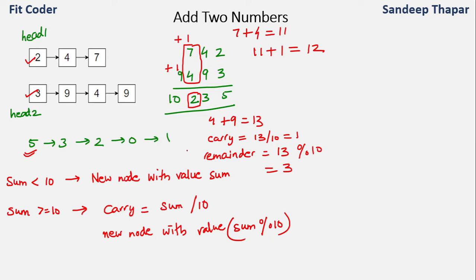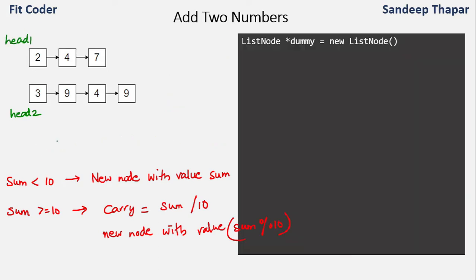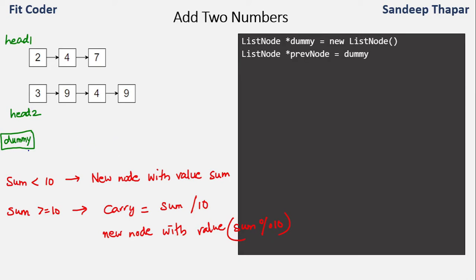Now let's look at the pseudo code. Like we have done in many linked list questions, we create a dummy node which acts as the start of our new linked list. We use this dummy node to avoid edge cases when the linked list is empty. We initialize the new linked list with the dummy node and at the end we return next of dummy. We also create a previous node which points to dummy, so whenever we create any node we connect previous to it to form the linked list chain.